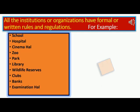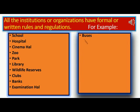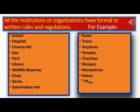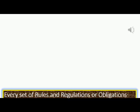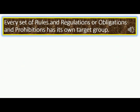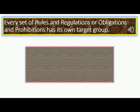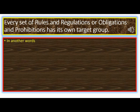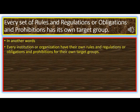For example: school, hospital, cinema hall, zoo, park, library, wildlife reserves, clubs, banks, examination hall, buses, trains, airplanes, temples, churches, mosques, monasteries, hotels, offices, sports, etc. Every set of rules and regulations or obligations and prohibitions has its own target group.